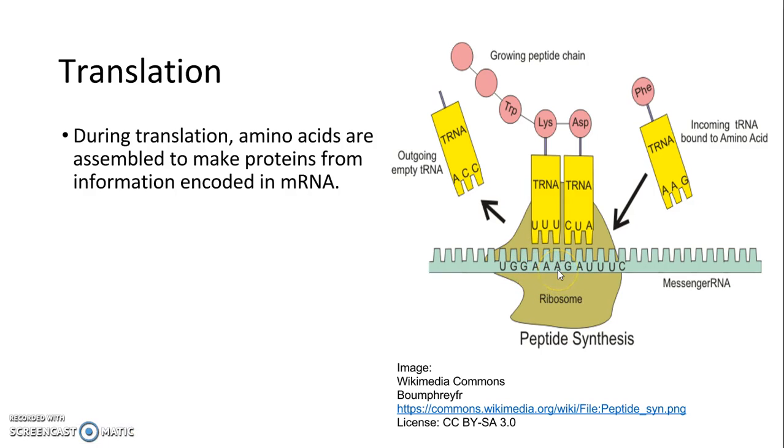The way that works is that the ribosome is going to read the mRNA codon. For example, you have AAA. It's going to bring in the tRNA that has the complementary base pairs, which would be UUU. And that's going to come into the site and add the amino acid. For this one, it would be LYS.